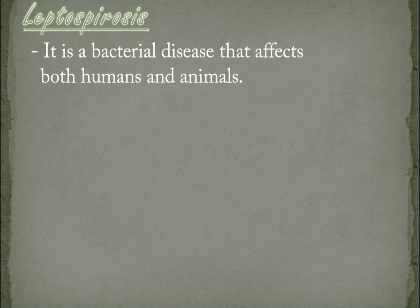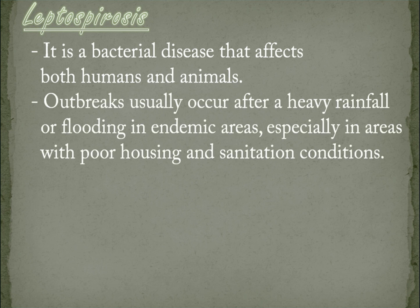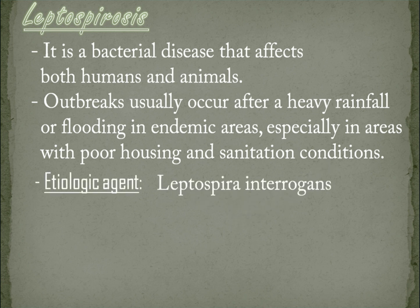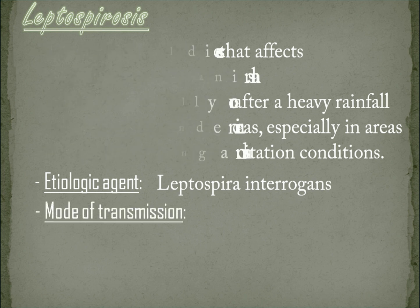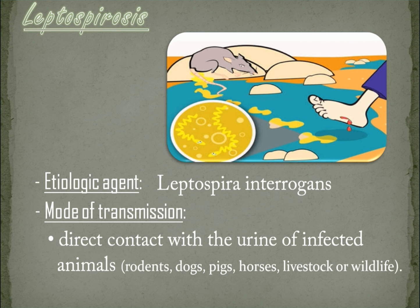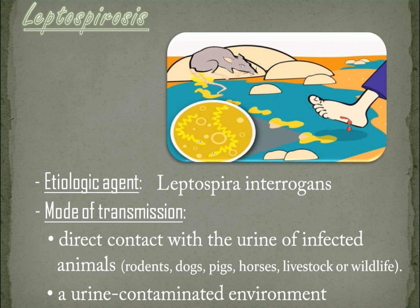Leptospirosis. It is a bacterial disease that affects both humans and animals. Outbreaks usually occur after heavy rainfall or flooding in endemic areas, especially in areas with poor housing and sanitation conditions. Etiologic agent: Leptospira interrogans. Mode of transmission. Direct contact with the urine of infected animals or a urine-contaminated environment. The bacteria enter the body through cuts or abrasions on the skin, or through the mucous membranes of the mouth, nose, and eyes.